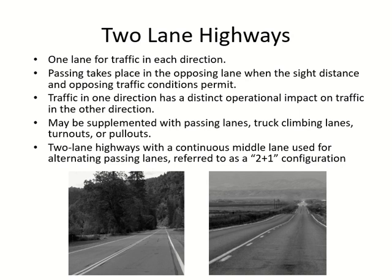Two-lane highways can sometimes have a temporary supplementary lane. These can be passing lanes — providing an extra lane so you don't have to go into oncoming traffic — or truck climbing lanes. A truck climbing lane is provided on upward gradients because trucks slow down significantly going uphill compared to level terrain.